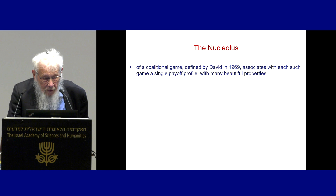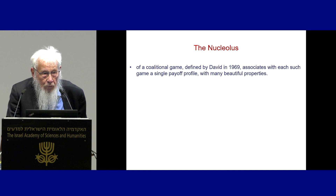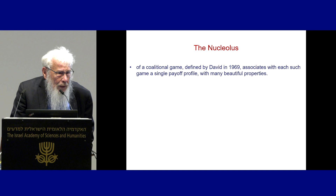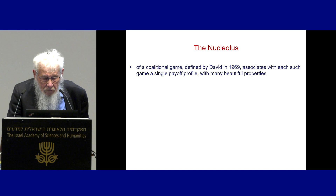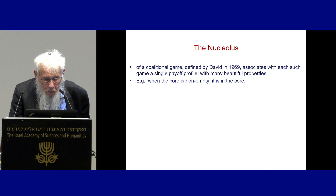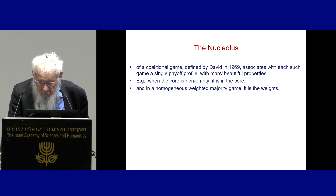So let's talk about the nucleolus. The nucleolus is a concept defined for coalitional games. It was defined by David in 1969. It associates with each such game a single payoff profile, like the Shapley value, but quite different from the Shapley value because it's based on strategic considerations. It's not an average, it's not a measure of power, but it's a sort of central point in the game. It has many beautiful properties — for example, when the core is non-empty, it's in the core, and in a homogeneous constant-sum weighted majority game, it is a set of weights.